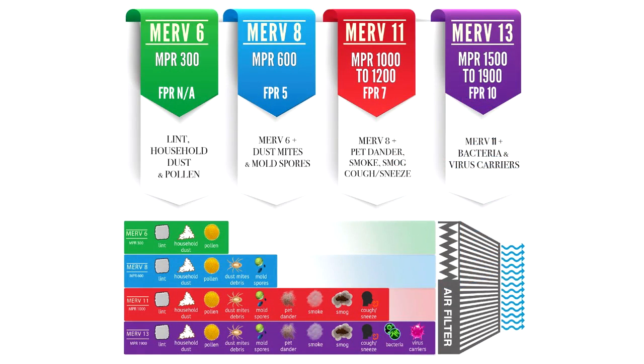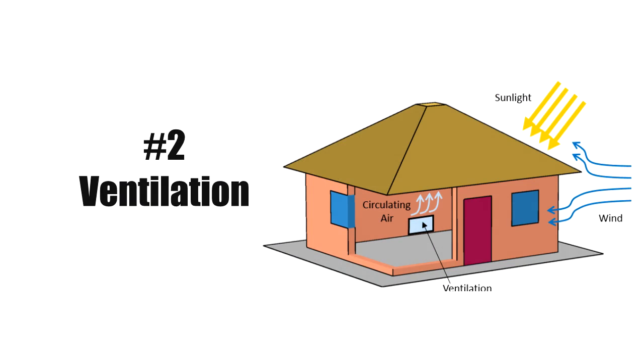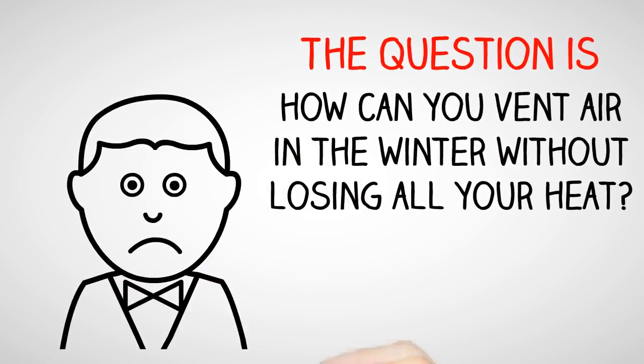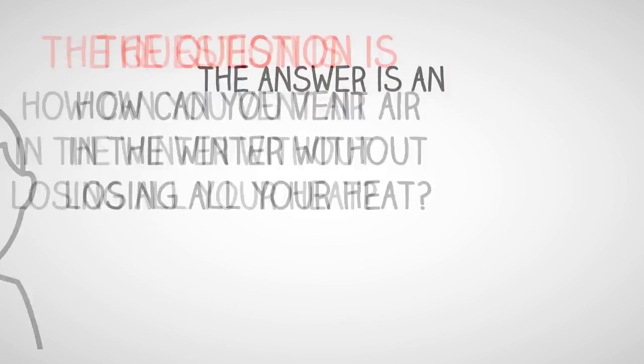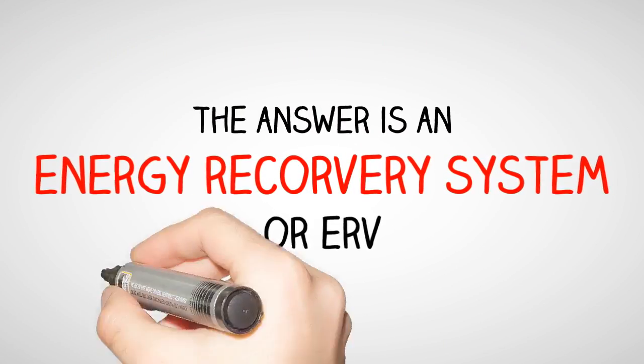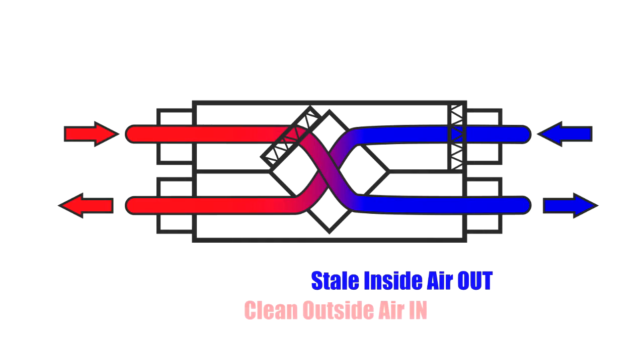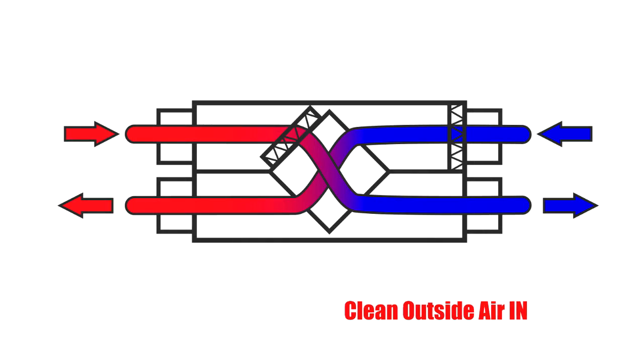The second thing to look at is ventilation. The question is, how can you ventilate air in the winter months without losing all of your heat? The answer is an energy recovery system. An energy recovery system takes old, unclean inside air and exchanges it with fresh, clean air from the outside.